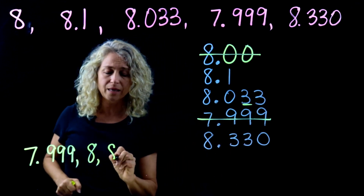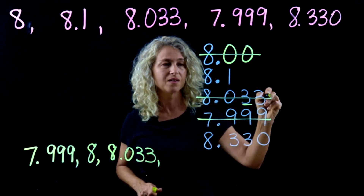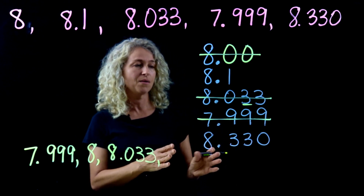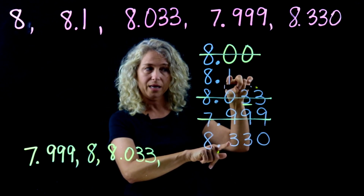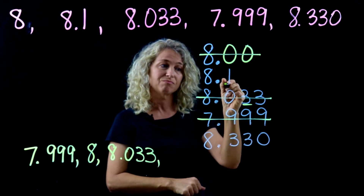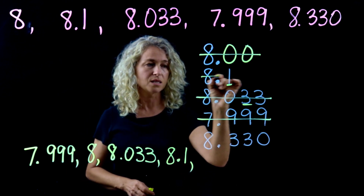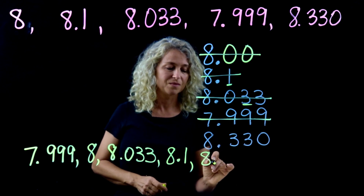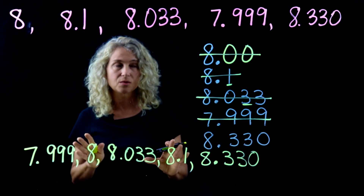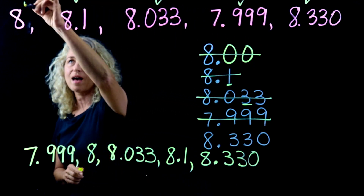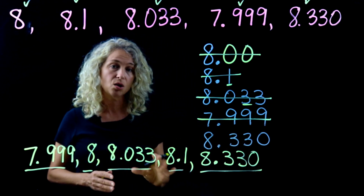Your next number is eight and thirty-three thousandths — cross it off. Now we've got two last numbers to compare. The eights are the same, so look at the tenths place: three versus one. One is least, so the next number is eight and one tenth. Cross it off, and your last number fills in the final spot. Check that you have all five numbers: one, two, three, four, five.